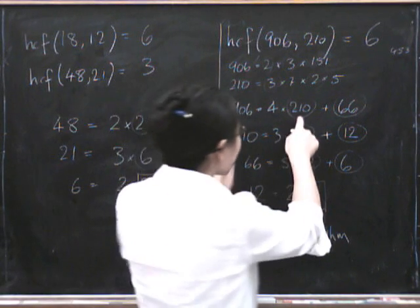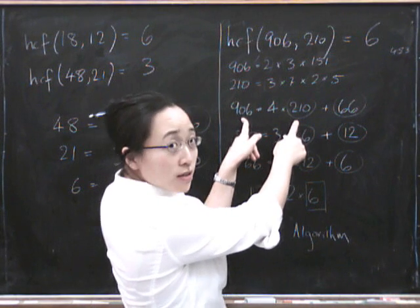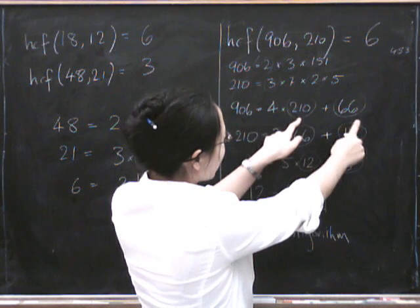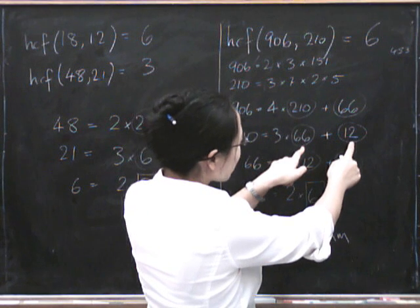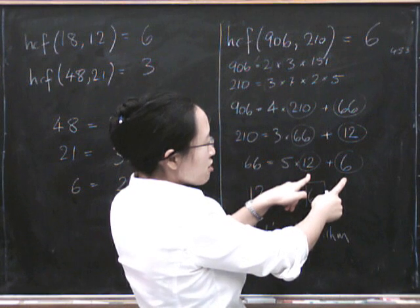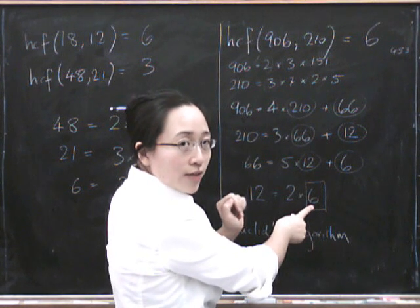So let's try it on this side as well. The point is that we're trying to find the highest common factor of 906 and 210, but that's the same as finding the highest common factor of these two things which is the same as finding the highest common factor of these two things which is the same as finding the highest common factor of those two things, but now that goes into it exactly so we know that has to be the highest common factor.